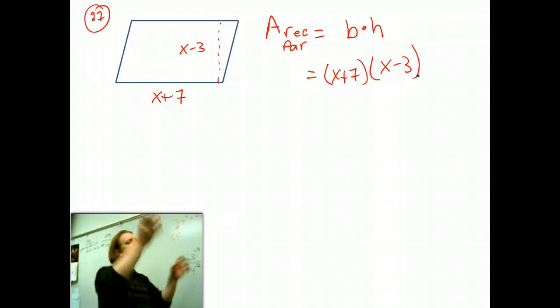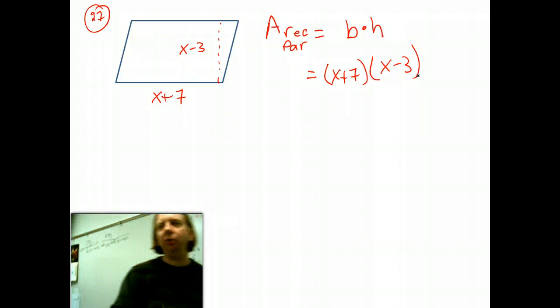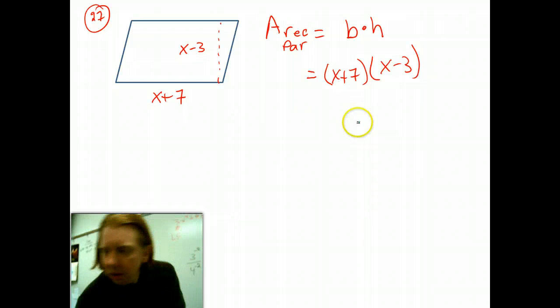You have to distribute it all the way out. That's where I get x squared plus negative 3x plus 7x minus 21.